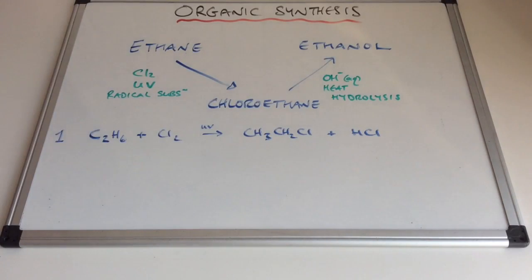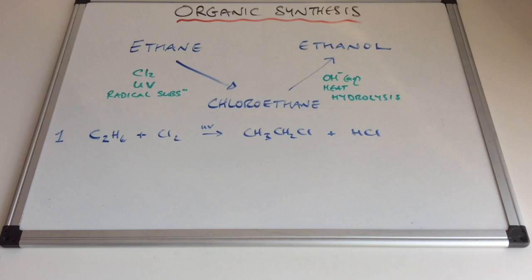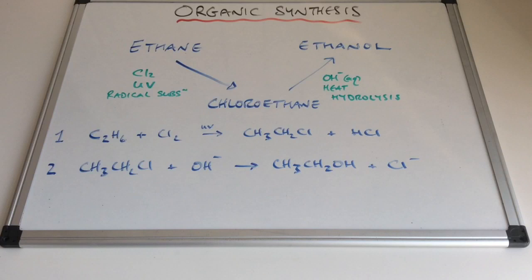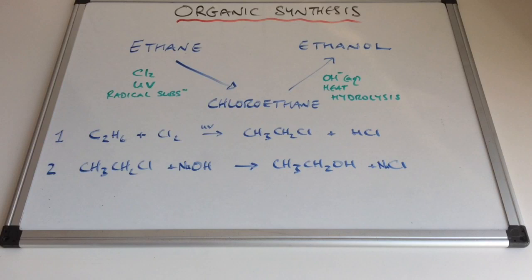For step one, ethane reacted with chlorine in the presence of UV gives chloroethane and hydrogen chloride. For step two, chloroethane with OH⁻ ions creates ethanol and a chloride ion. If you put sodium hydroxide in the equation instead of OH⁻, that's what it would look like.